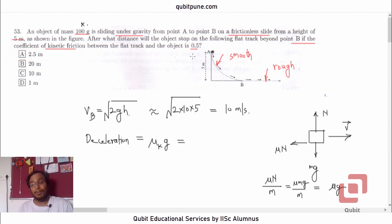Mu k is 0.5. That's a very large value. 0.5 into g. Again, 10. We have approximated it. So that will be 5 meters per second square.